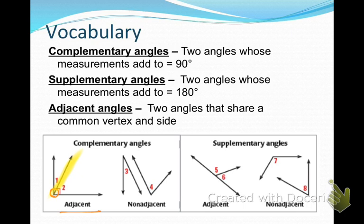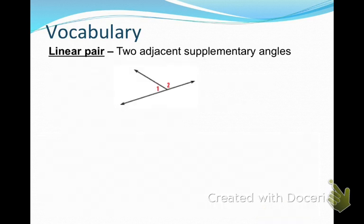Supplementary angles are the same way. They can be non-adjacent, which means there just happen to be two angles that add up to 180. Or they might share a vertex and the same side and therefore be adjacent angles. Adjacent angles that are also supplementary have a special name, and that is called a linear pair. What I want you to notice about a linear pair is that the non-adjacent sides form opposite rays.